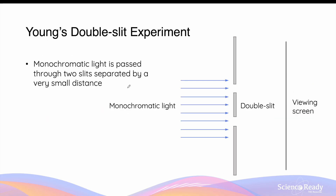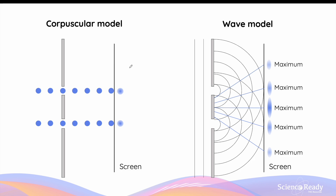This leads me to discuss the historical significance of Thomas Young's double slit experiment. Young performed a simple experiment whereby monochromatic light — that is, light of a single colour or wavelength — is passed through two slits separated by a very small distance. At the time, there were two main models of light: Newton's corpuscular model, which describes light as small particles, and Huygens' wave model of light. Newton's corpuscular model predicts that only two streams of particles or corpuscles will pass through the two slits, leading to the formation of two spots on the screen.